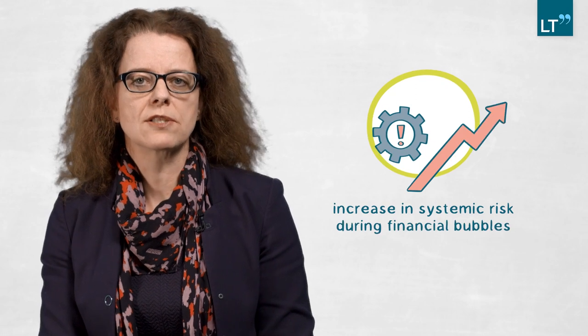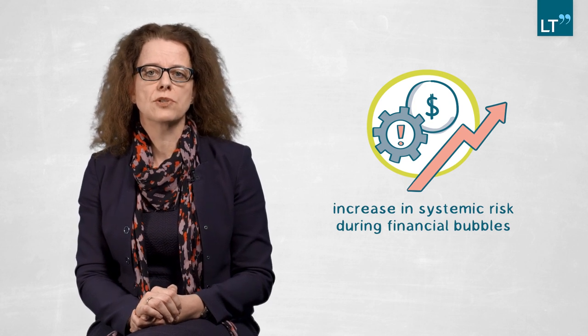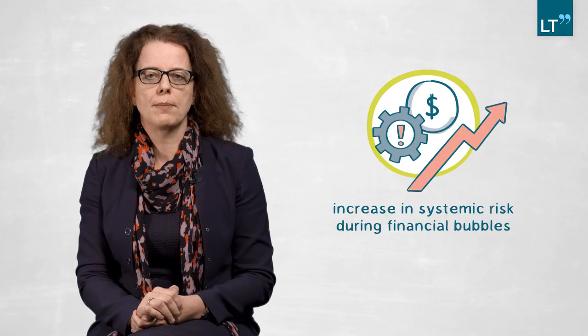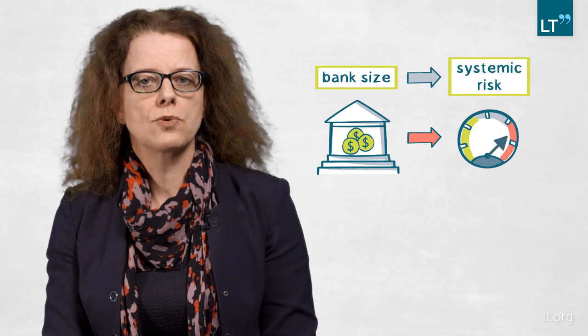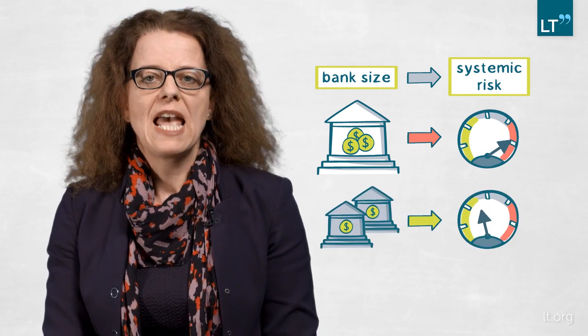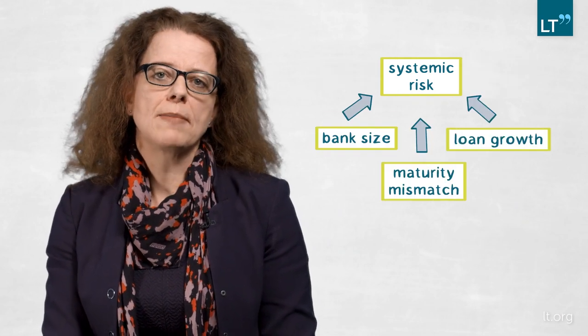First, we can confirm that there actually is an increase in systemic risk in times of financial bubbles. What is interesting is that we find such an increase already during the boom phase of the financial bubble. What interests us most is the heterogeneity across banks and across bubbles. We find that a main driver of the increase in systemic risk during financial bubbles is bank size, so large banks have much larger systemic risk contributions than smaller banks. In addition, we find that loan growth matters and maturity mismatch matters.